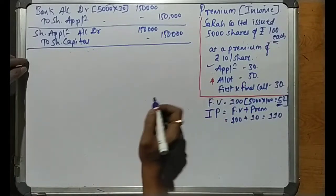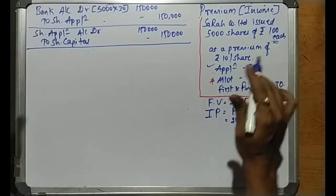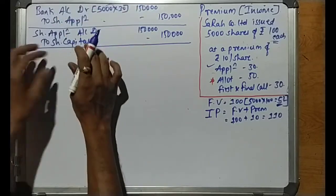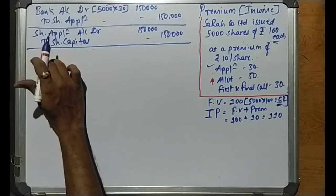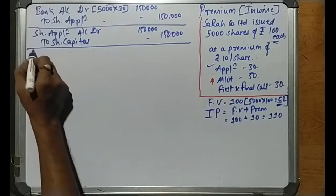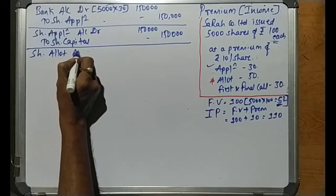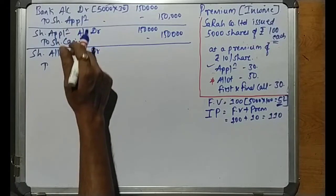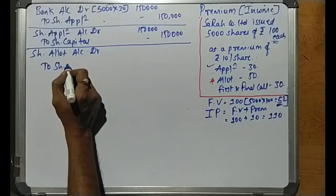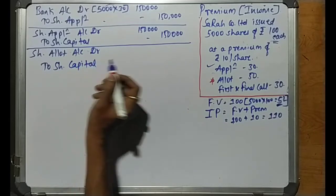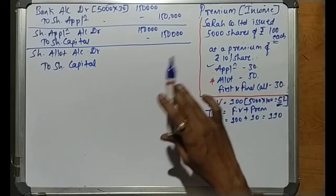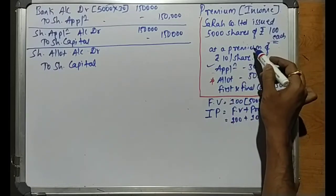The third entry is the allotment stage due entry. In the standard entry we replace the application account with Share Allotment Account. So the entry begins: Share Allotment Account debit to Share Capital. But since this is a premium issue at rupees 10 per share, we need to also collect the premium at this stage.